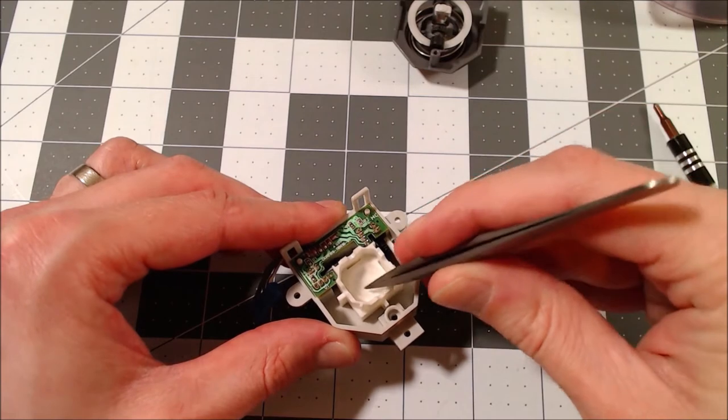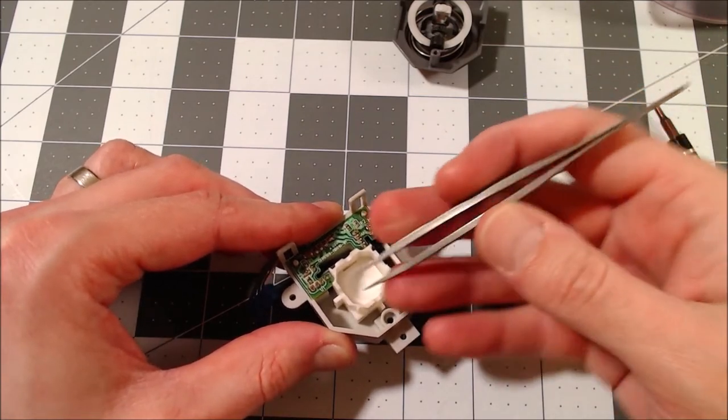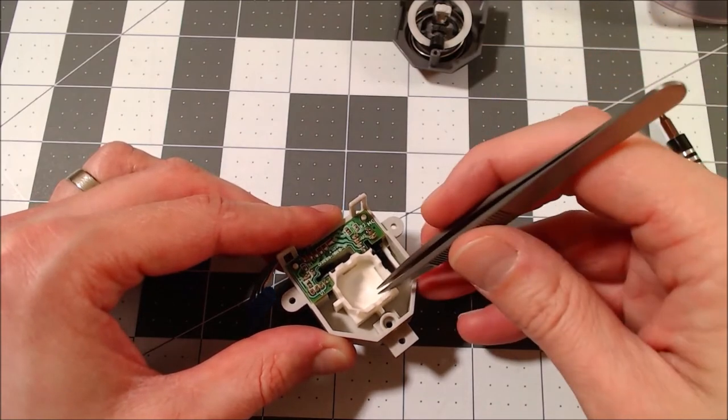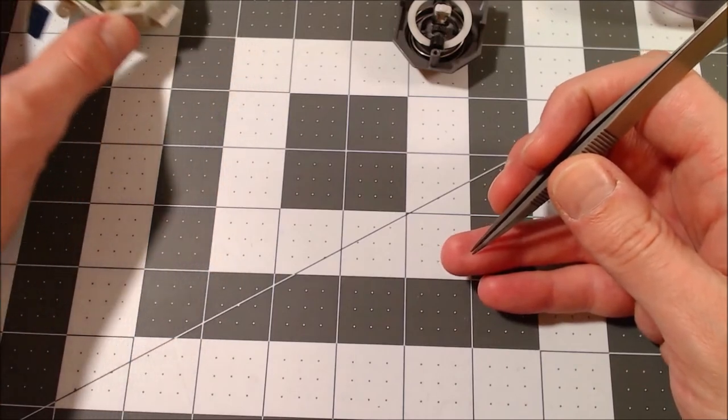What some people do is fill that with an epoxy to kind of re-establish the bowl shape to what it was formerly. I'm not going to do that. So I'm going to put this piece back in and we're going to move it to the side. We don't need it.